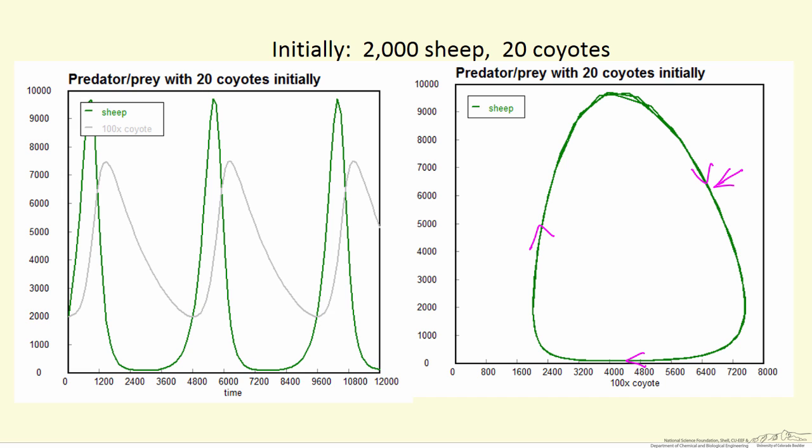Coyote numbers are increasing while sheep are decreasing, whereas on the left coyote numbers are increasing while sheep numbers are increasing. These phase plane plots give you a better visualization of the behavior.